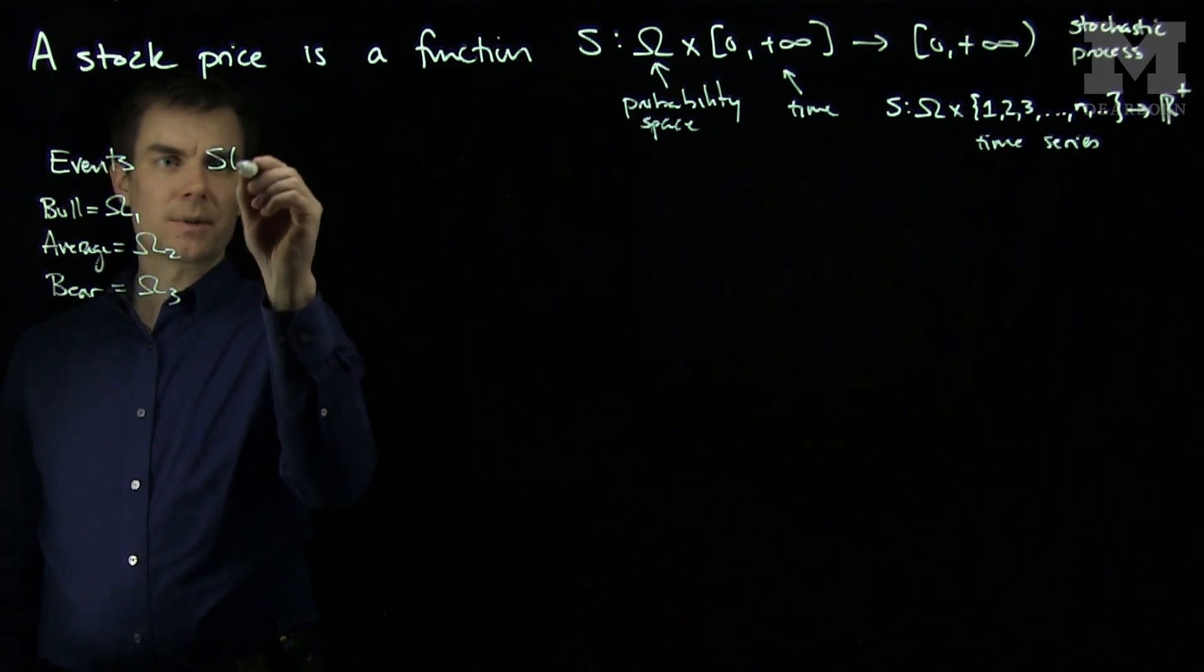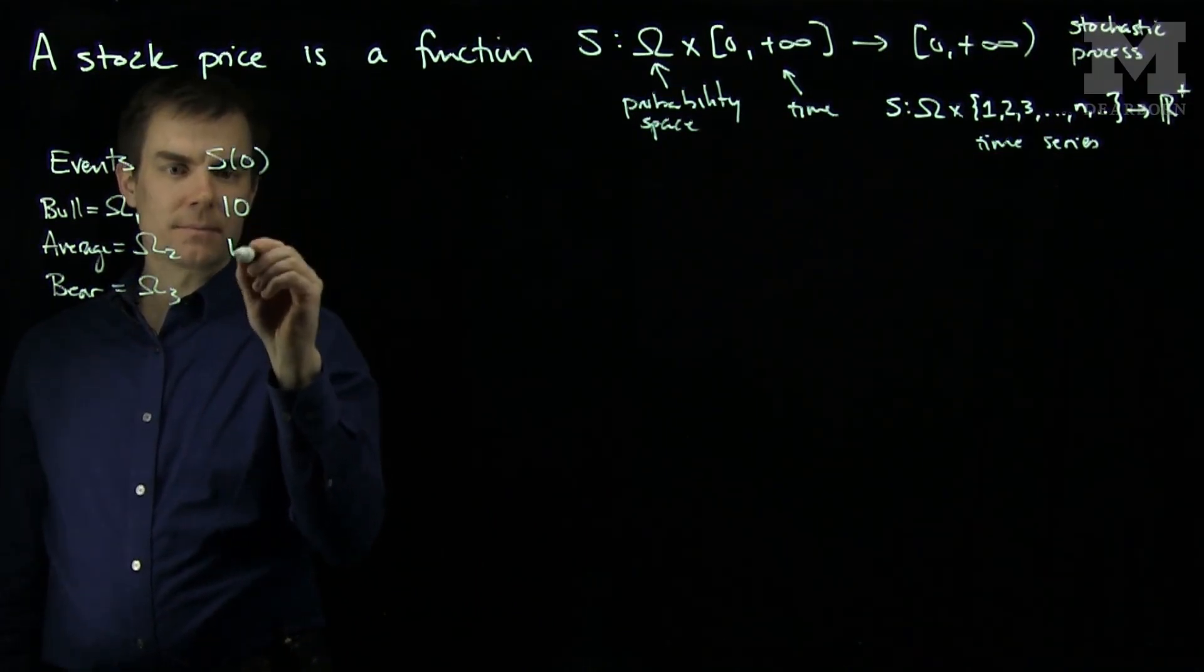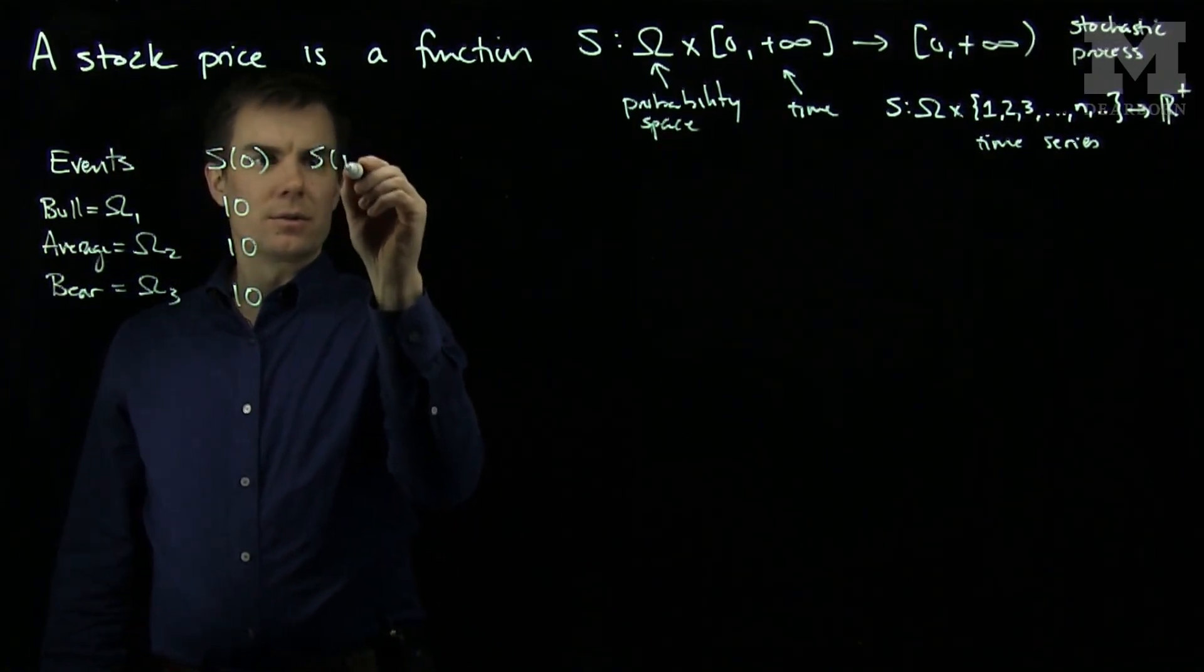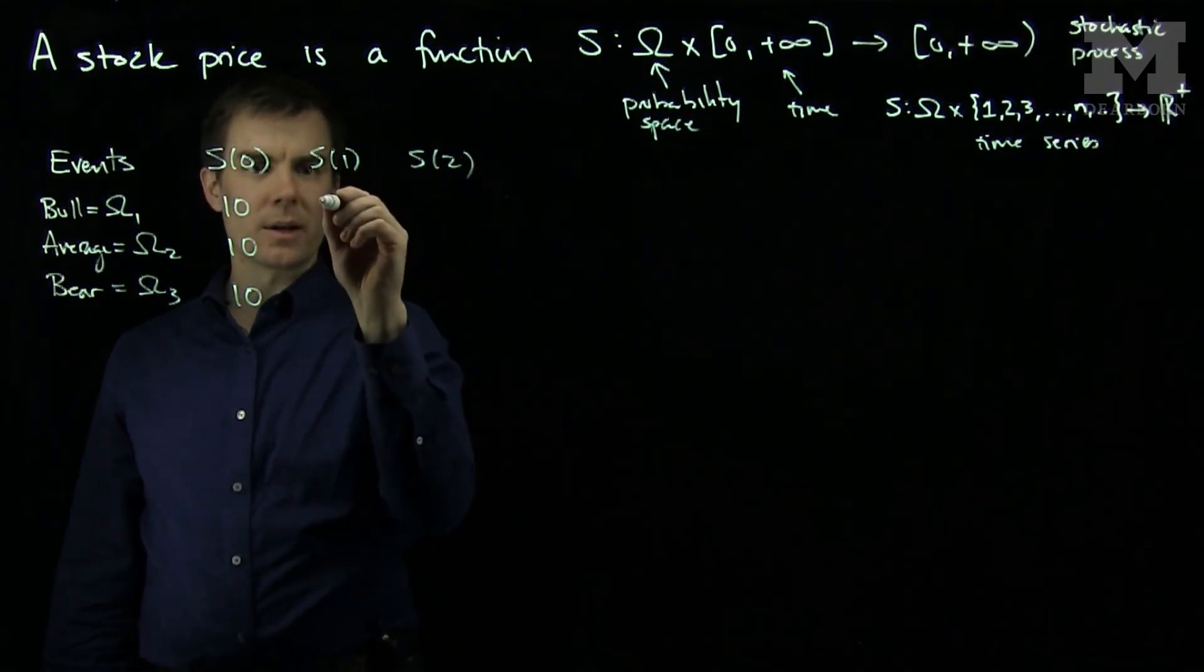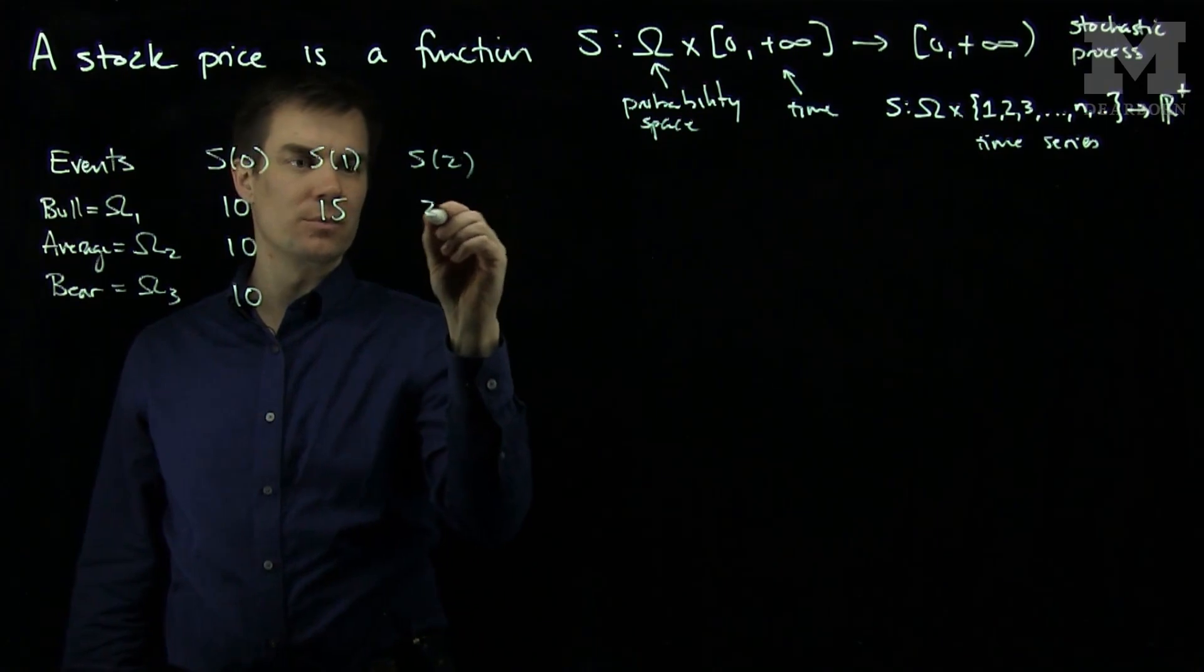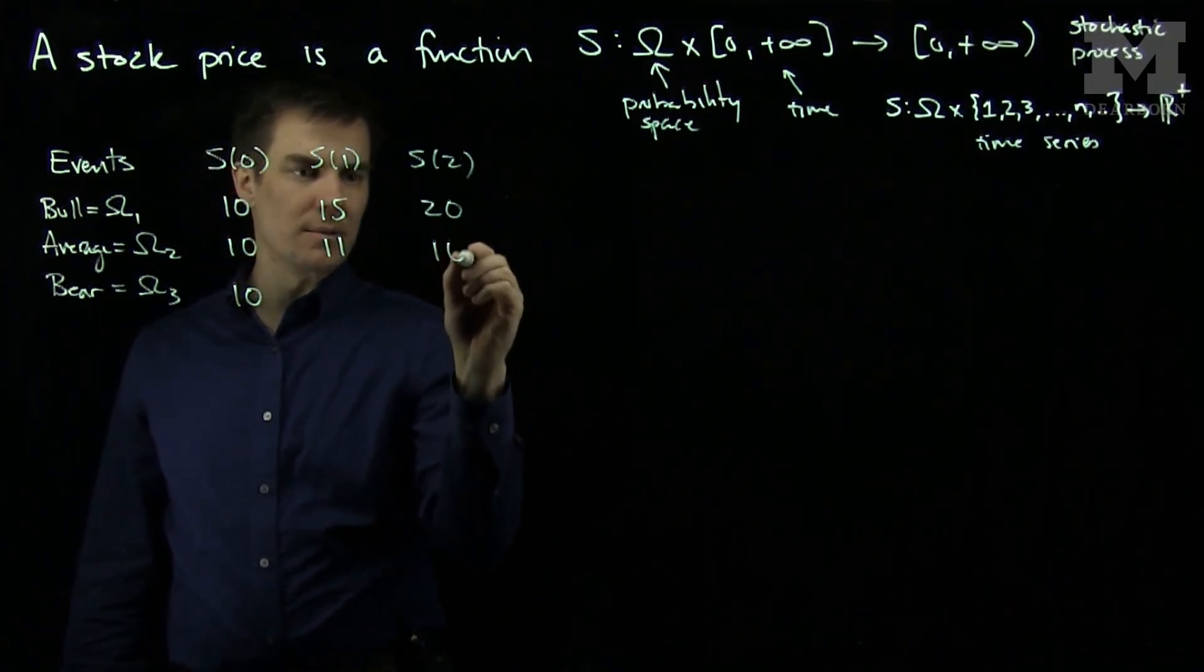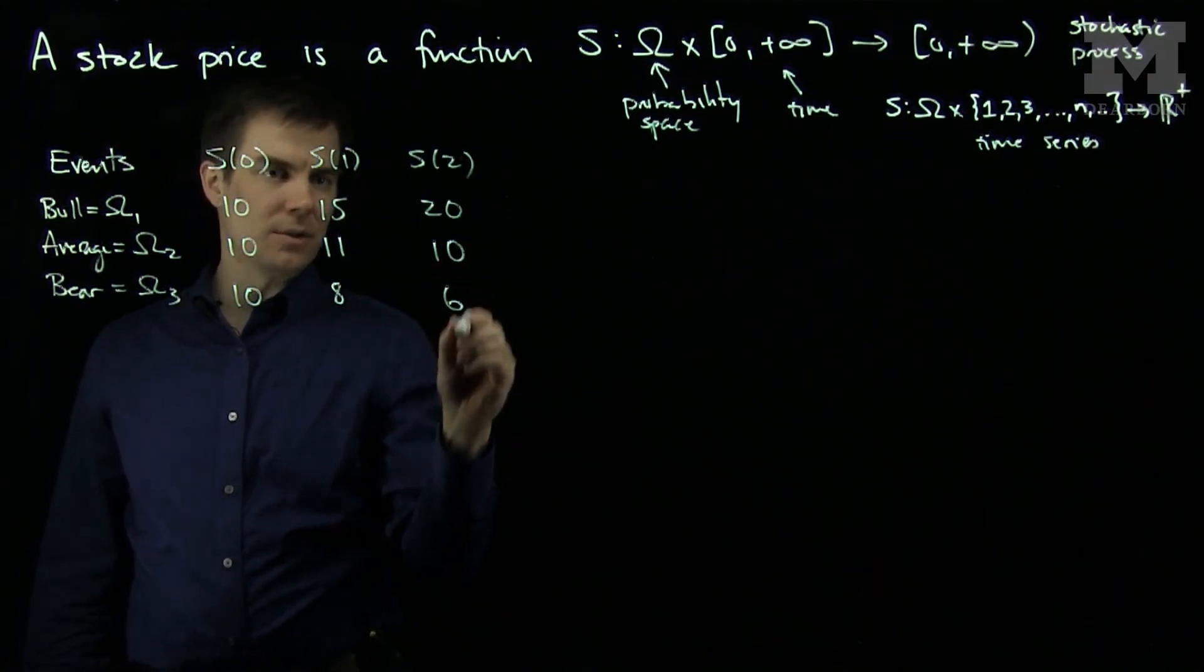And in each of these cases I'm going to say that my stock price at time zero is equal to ten. And in the bull market, let's consider two future times, time one and time two. We'll say that in a bull market it goes up to 15 and then it goes up to 20. In an average market we'll say it goes up to 11, but then goes back down to 10. And in the bear market we'll say it goes down to 8 and then goes down to 6.